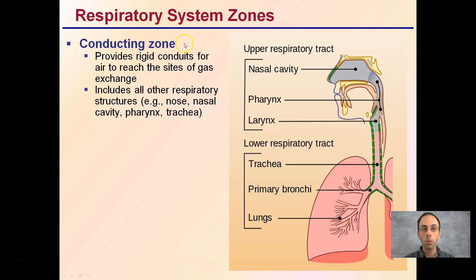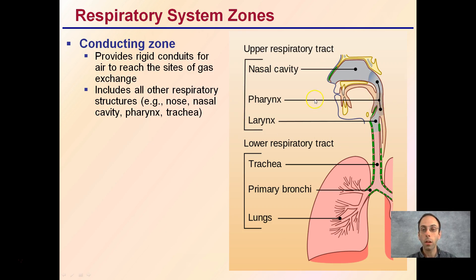The first part is the respiratory system zones. The first one is the conducting zone. This provides rigid conduits for air to reach sites of gas exchange. So what we're looking at would be the nose, the nasal cavity, the pharynx, and the trachea — up in this region. These rigid zones stay open all the time and they're what's allowing air to both enter and also exit.